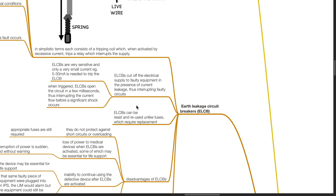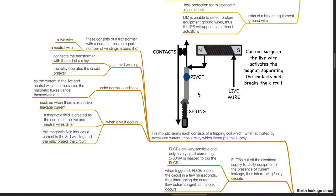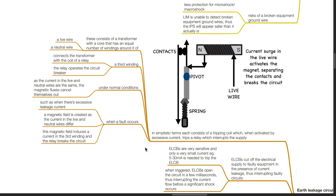Earth leakage circuit breakers. In simplistic terms, each consists of a tripping coil which, when activated by excessive current, trips a relay which interrupts the supply. This consists of a transformer with a core that has an equal number of windings around it of a live wire and a neutral wire. A third winding connects the transformer with the coil of a relay. The relay operates the circuit breaker. Under normal conditions, as the current in the live and neutral wires are the same, the magnetic flux of each cancel themselves out. When a fault occurs, such as when there is excessive leakage current, a magnetic field is created as the current in the live and neutral wires differ. This magnetic field induces a current in the third winding and the relay breaks the circuit.